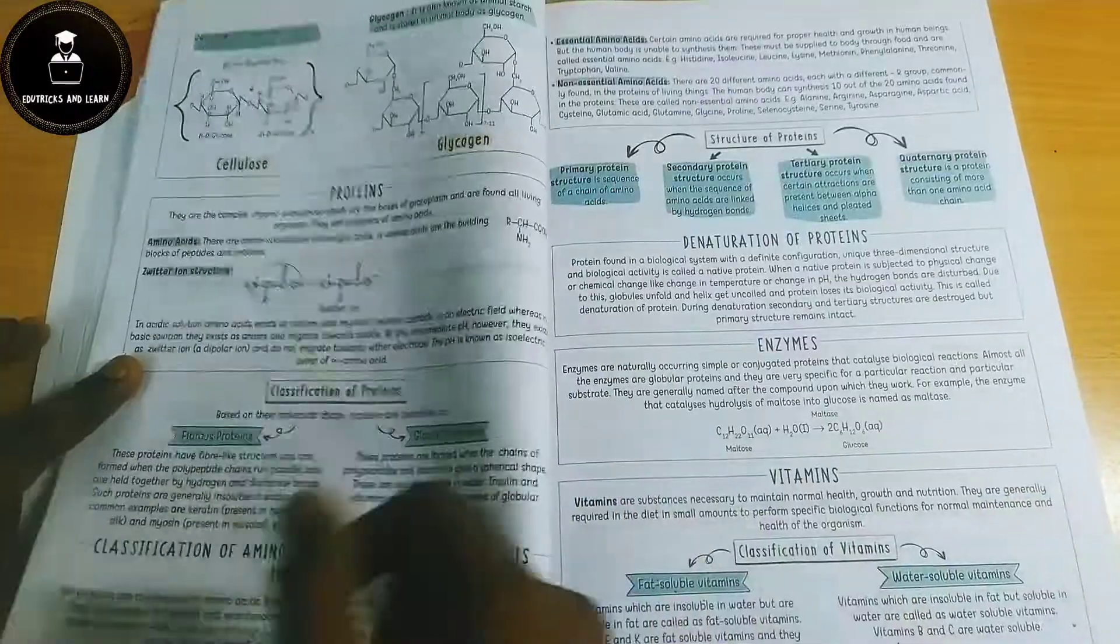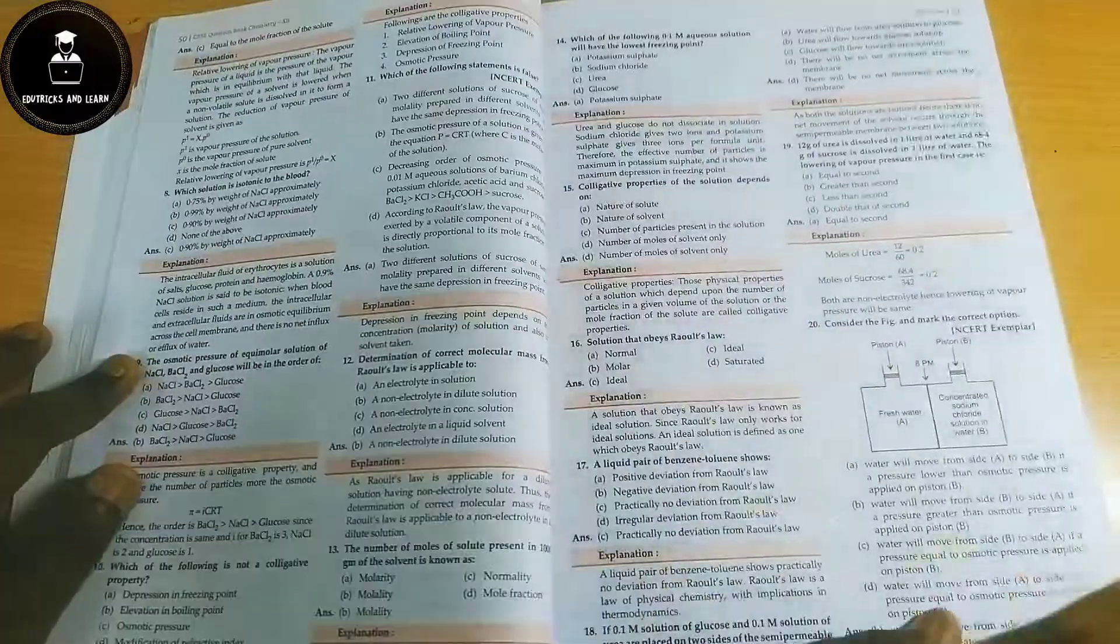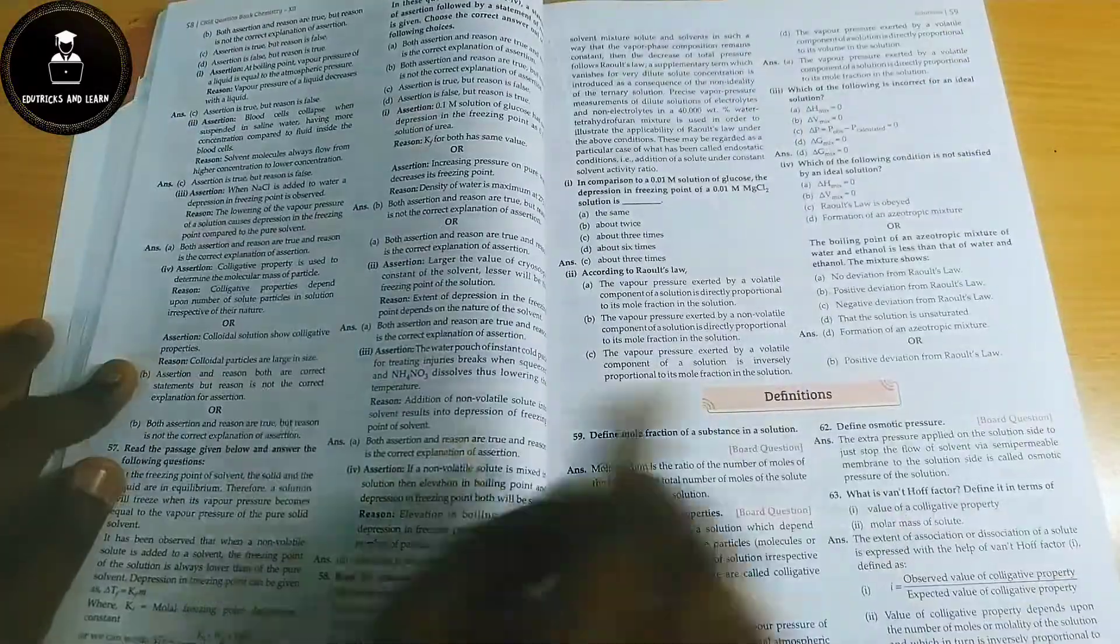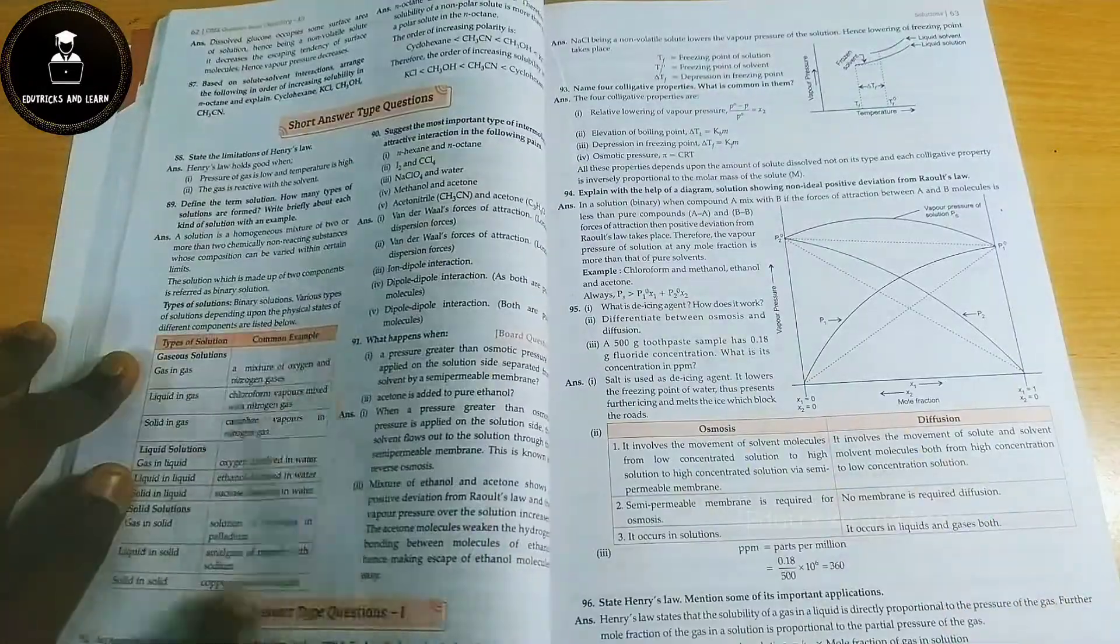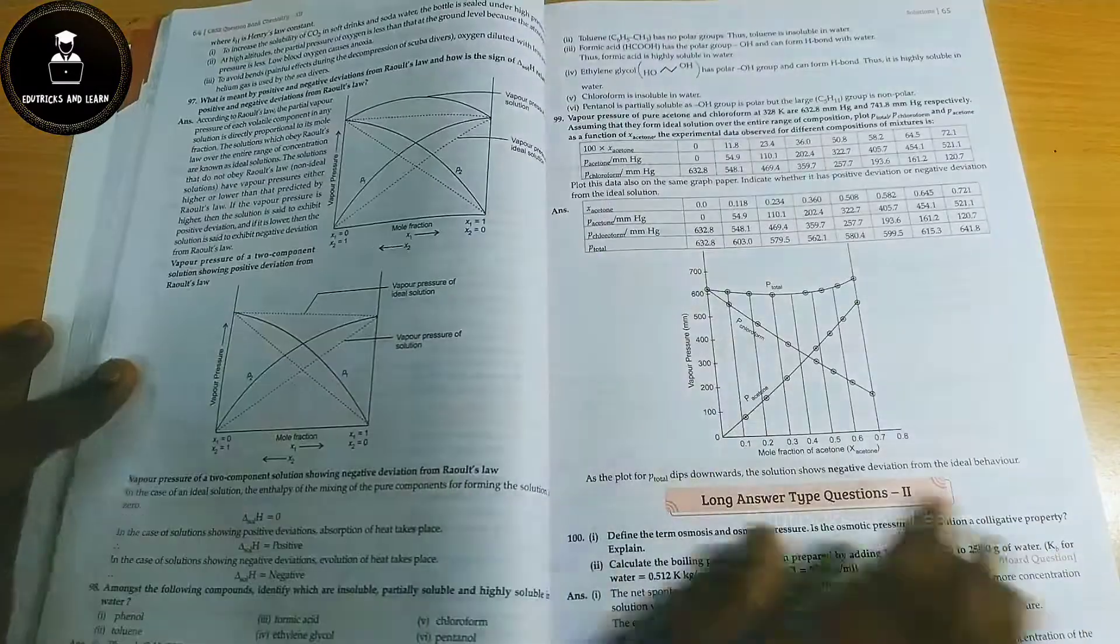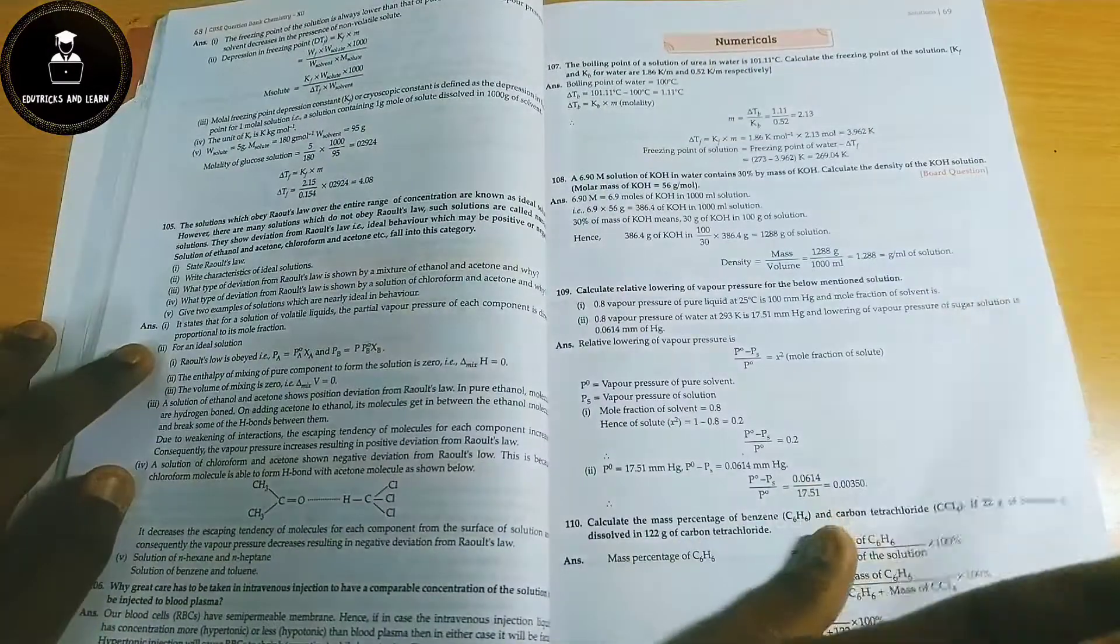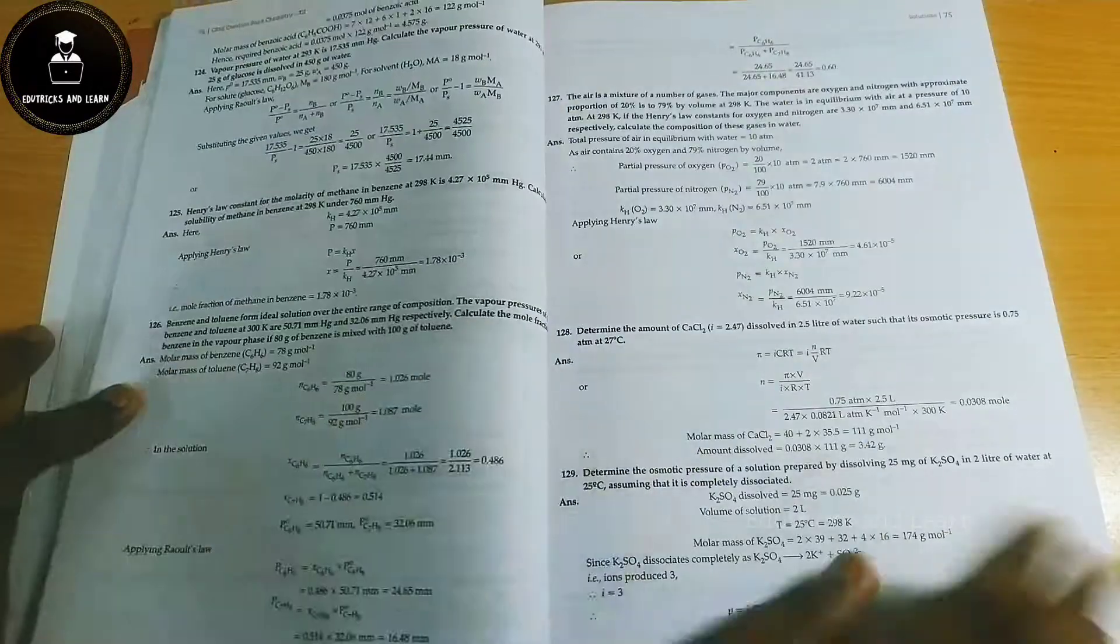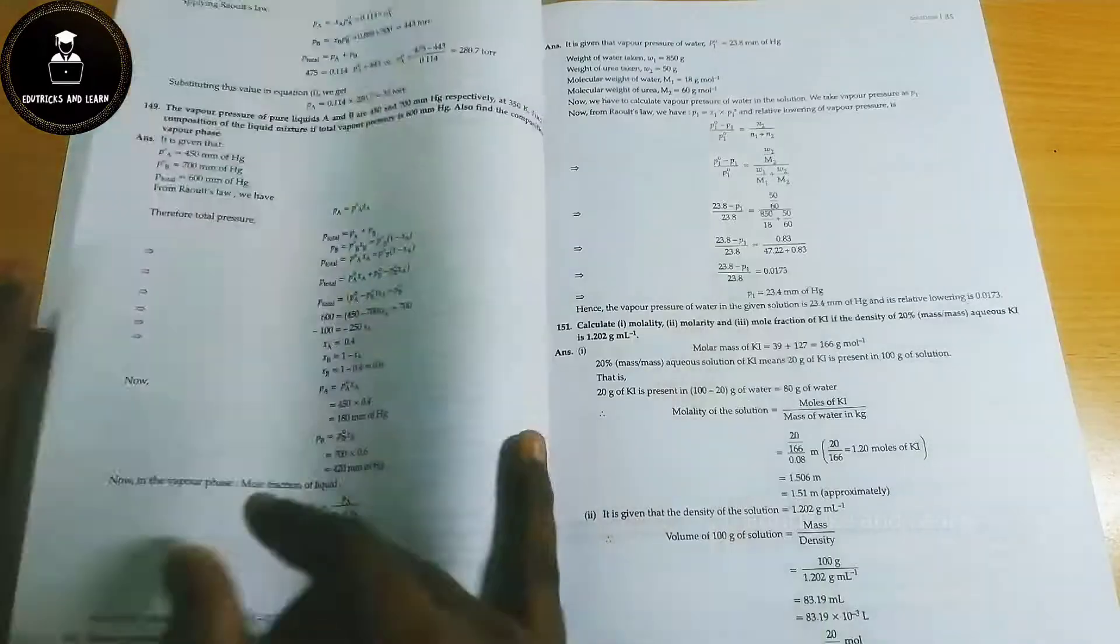They've given sections for Physical Chemistry, Inorganic Chemistry, and Organic Chemistry. They are starting with the chapter with multiple choice questions, case based questions, assertion and reason based questions, definitions, very short answer type 1 and type 2, short answer type 1 and type 2, and long answer type 1 and type 2 questions. Also they've given naming reaction questions, laws, numericals, derivations, etc.